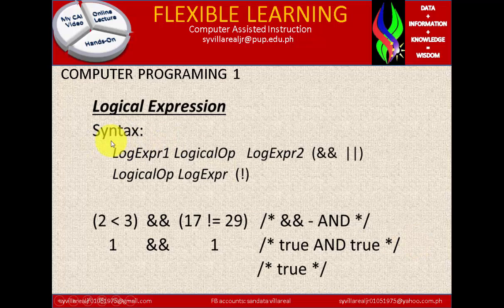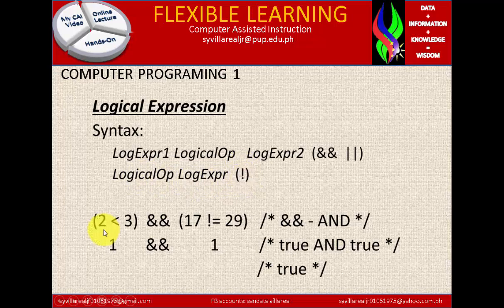For logical expressions, we have the syntax — that is the language used by the computer. The structure is: logical expression 1, logical operator, logical expression 2. We are using AND and OR as the two given operators. The last is NOT, for logical negation, using the exclamation mark. For example, a function of 2 less than 3 AND a function of 17 not equal to 29 — this is considered AND, that is multiplication.